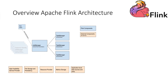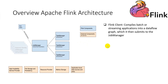To submit a Flink job, there are three components required. The first is the Flink client. The Flink client's responsibility is to compile a batch or stream application into a data flow graph, which it then submits to the job manager.